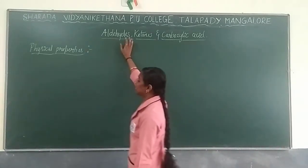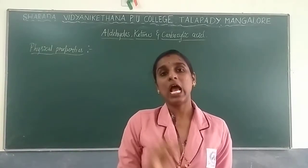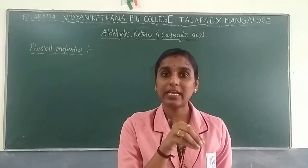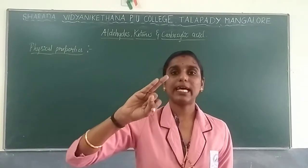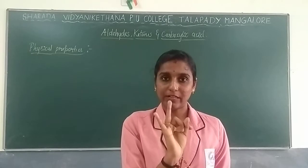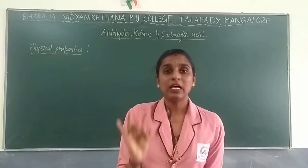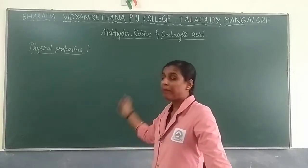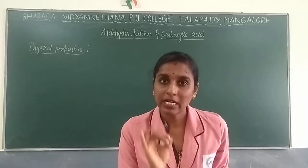Now only the preparation of aldehyde alone will be done. The first reaction is the Rosenmund reaction, where acyl chloride or aryl chloride is used. Hydrogenation is done in the presence of palladium and barium sulphate catalyst, so you get aldehyde as a product. The second reaction is the Stephen reaction, where a nitrile (C≡N) is utilized. By using the nitrile in the presence of stannous chloride and hydrochloric acid, production of imines and subsequent hydrolysis gives aldehyde as a product.